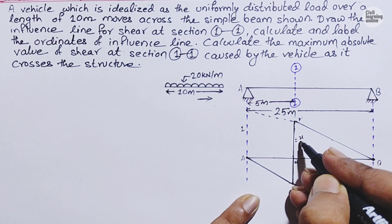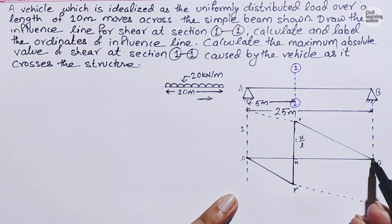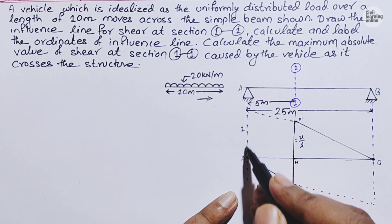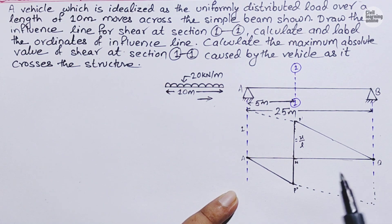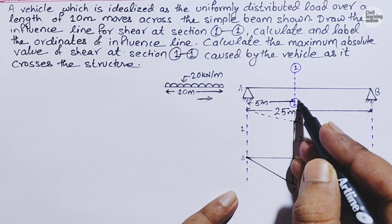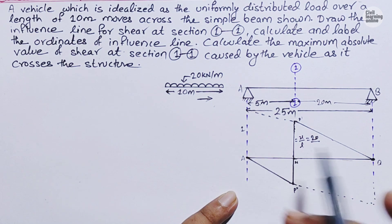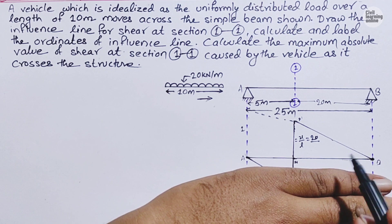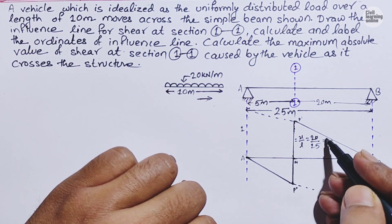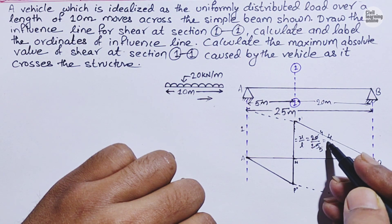Here, X is the distance from the support up to the section point. The span from A is 20 meters and from B is 5 meters, making the total span L equal to 25 meters. So the ordinate on the left side equals X upon L, which is 20 upon 25, giving us 4 upon 5.